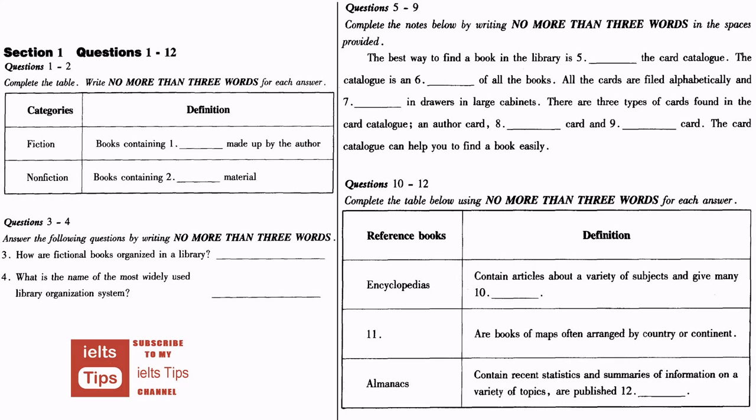The Dewey Decimal System provides a category for every type of non-fiction book. The best way to locate a book in the library is to use the card catalogue. The card catalogue is an index of all the books in the library. Information about a book is listed on cards. All the cards are filed alphabetically and stored in drawers in large cabinets. The card catalogue can help you locate a particular book, a book on a certain subject, or a book by a particular author. In the card catalogue, each book has three cards: an author card, a title card and a subject card.